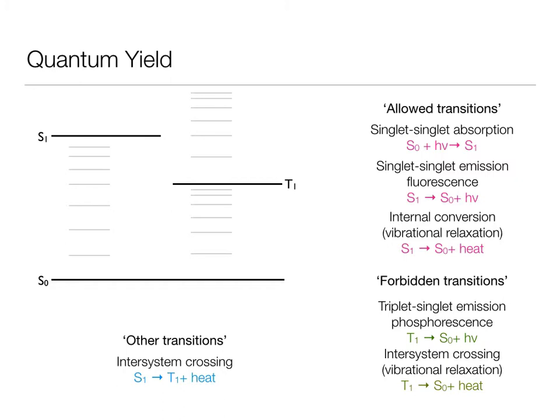For my triplet state, well the amount of phosphorescence depends on how much triplet I make. So I can then look at my triplet state decaying by either phosphorescence or vibrational relaxation and the proportion of those that occur is going to depend not only on the fate of the triplet state but on how much triplet state I can make.